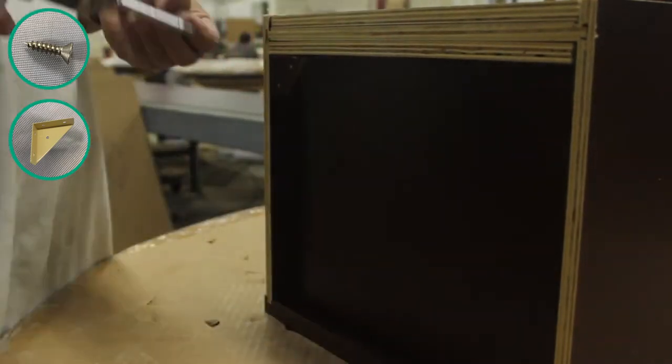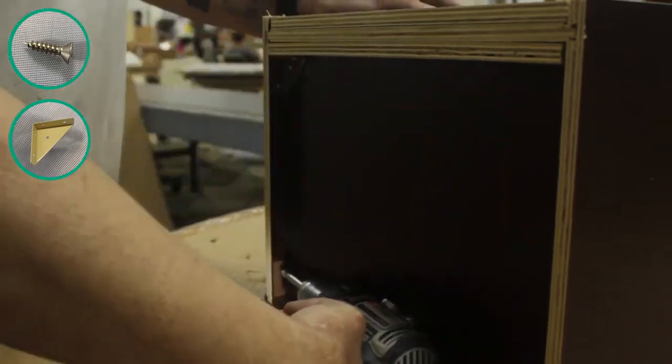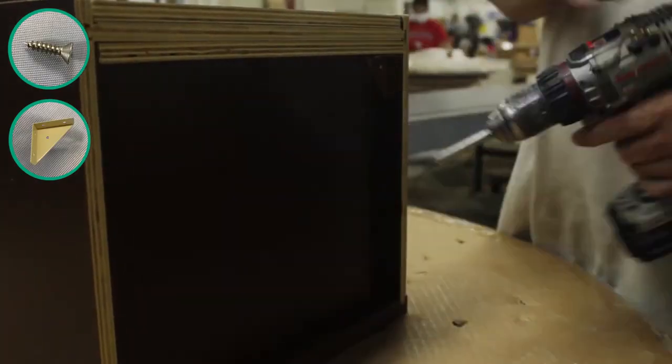Now place a corner bracket into each corner of the top and bottom to firmly secure the cabinet together. Each bracket will be fastened down using three screws.